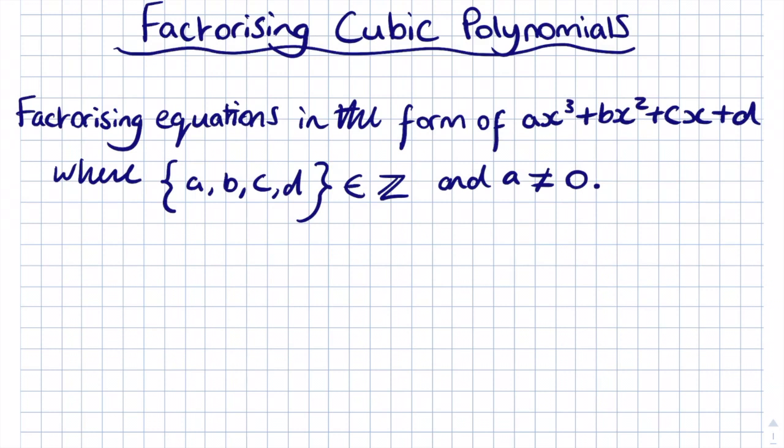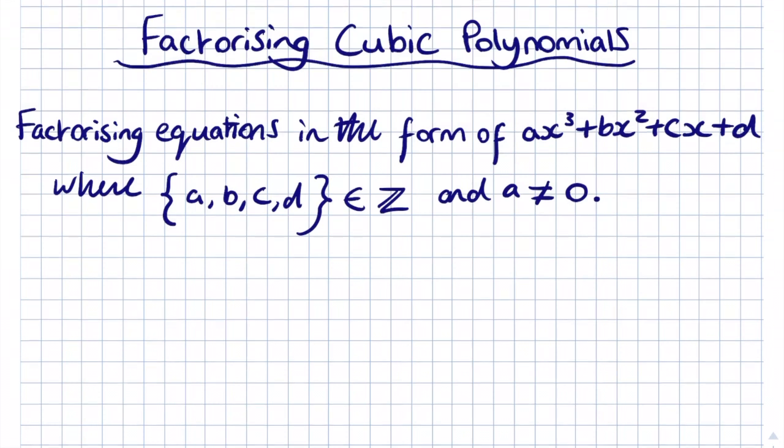Hi guys, welcome to this easy maths video. Today I'm going to show you how to factorise cubic polynomial equations in the form ax³ + bx² + cx + d, where a, b, c and d are integers and a is not equal to zero, because if a was equal to zero then the equation would be a quadratic function.